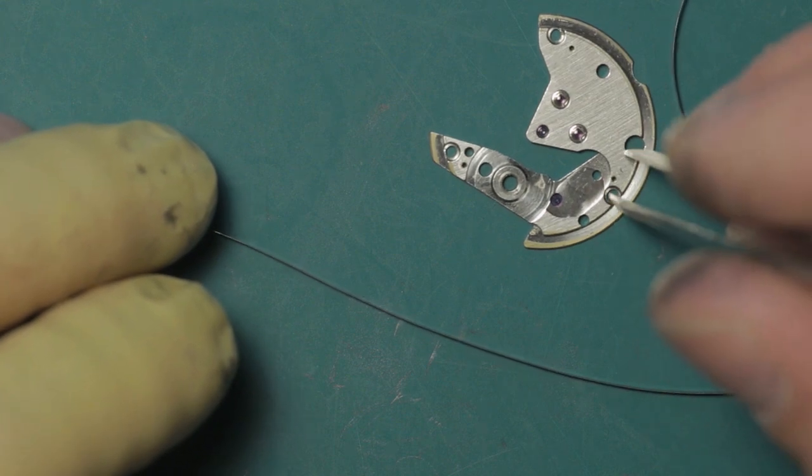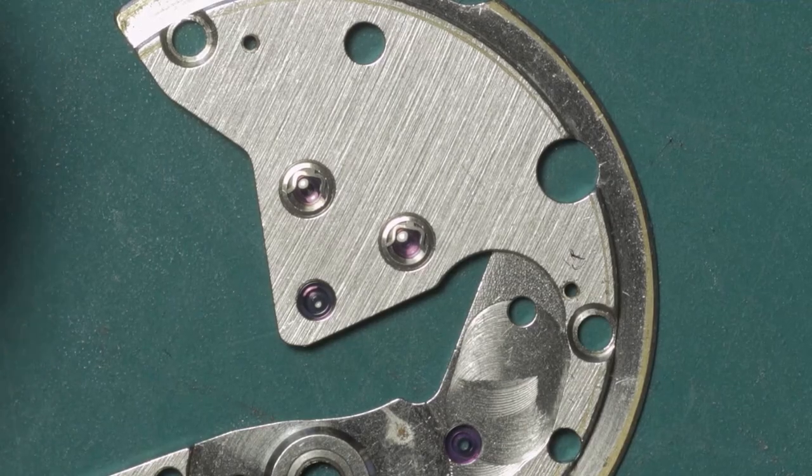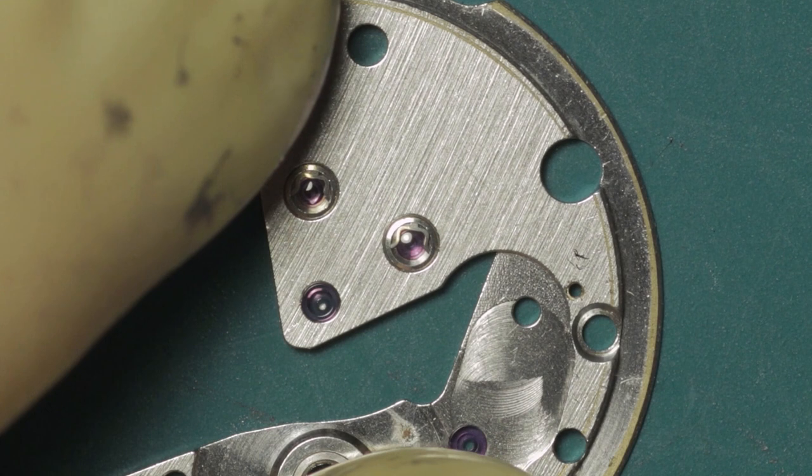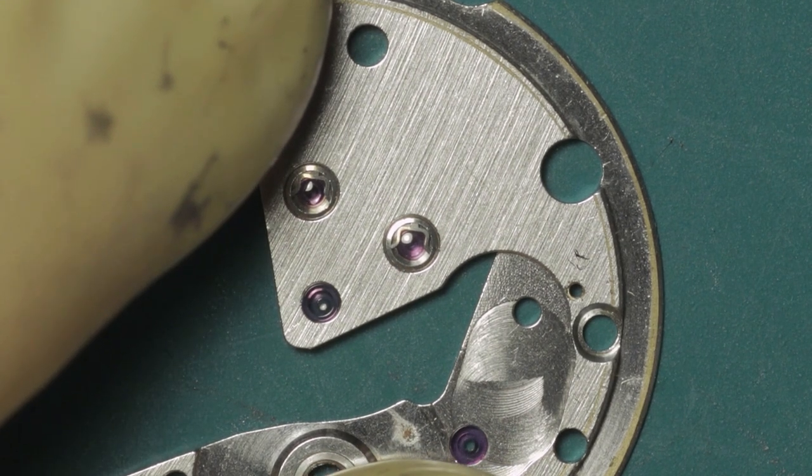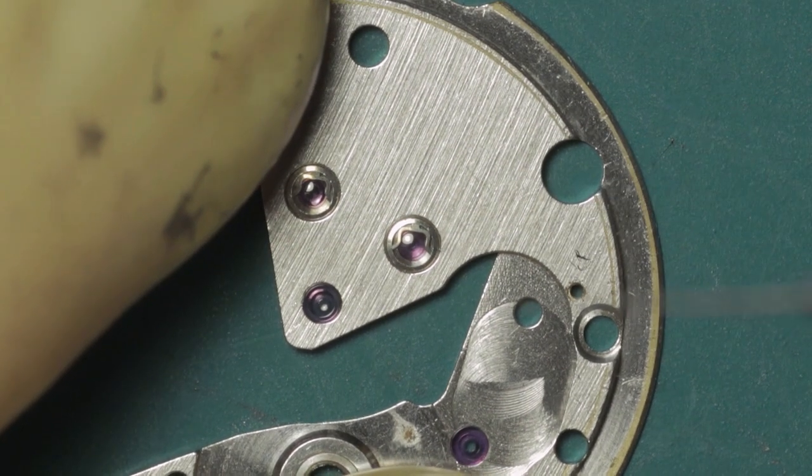You can see down here this is the train and barrel bridge, and these are the diafix springs. Now what a lot of people try to do with these that makes it much more difficult is actually remove them completely, and that's absolutely not what you want to do unless they are damaged. What you want to do is try and keep them in place.